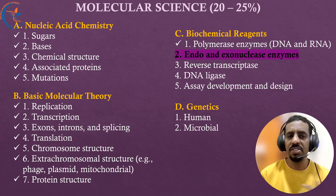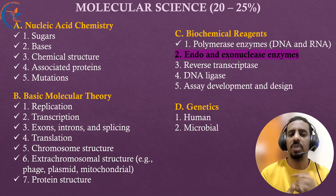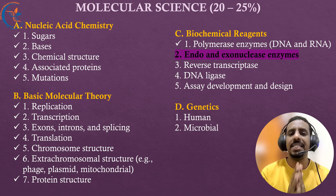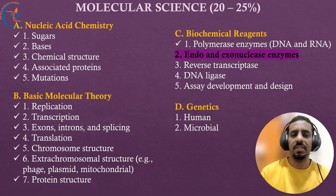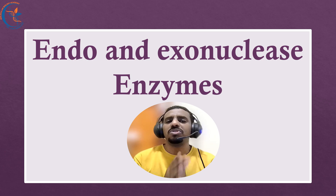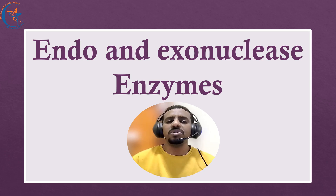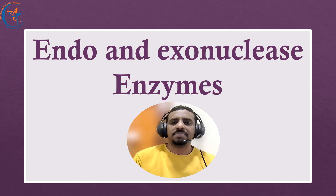In our previous lectures, we completed the multiple choice questions related to nucleic acid chemistry and basic molecular theory. Today, we'll move to cover the second part of biochemical reagents: endo and exonuclease enzymes. Let's focus on questions related to endo and exonuclease enzymes and review the molecular biology ACP questions from the previous exams.